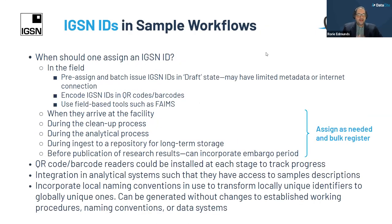The fifth use case is features of interest — linking the collection sites with the samples. You want to identify related entities closely linked to the material sample. We're not just talking about the physical objects that are the samples themselves, but also where the samples could have been taken from. You can individually identify the feature of interest and the sample through different IDs and relate them using the related identifier metadata to mirror hierarchical relationships.